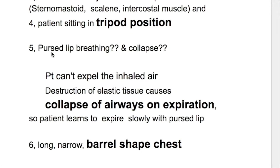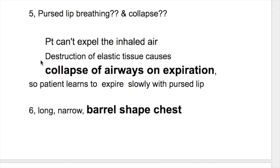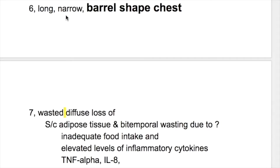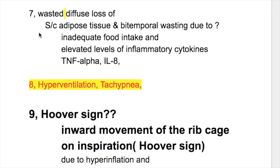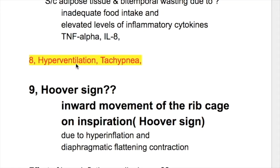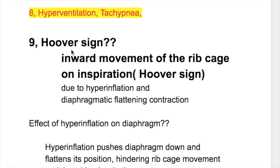Number five, patients have pursed-lip breathing. Why? The patient cannot expel the inhaled air; destruction of elastic tissue causes collapse of the airway on expiration, so the patient learns to expire slowly with pursed lips. Number six, they have a long narrow barrel-shaped chest. Number seven, patients are wasted with diffuse loss of subcutaneous adipose tissue and bitemporal wasting due to inadequate food intake and elevated levels of inflammatory cytokines, tumor necrosis factor and interleukin-1. Number eight, patients are hyperventilating and tachypneic.